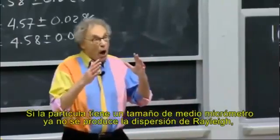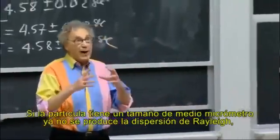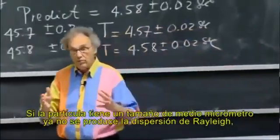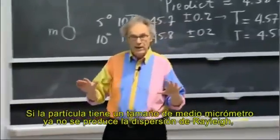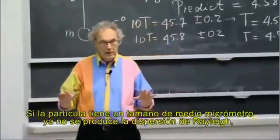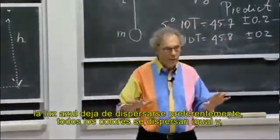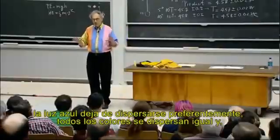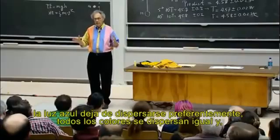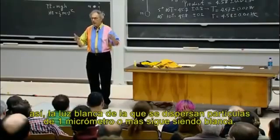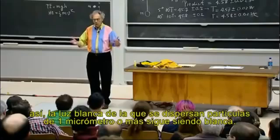If the particles are as large as half a micron, then there is no longer Rayleigh scattering. There is no preferred scattering for the blue light — all colors scatter equally. And so white light scattered off particles that are half a micron or larger remains white.